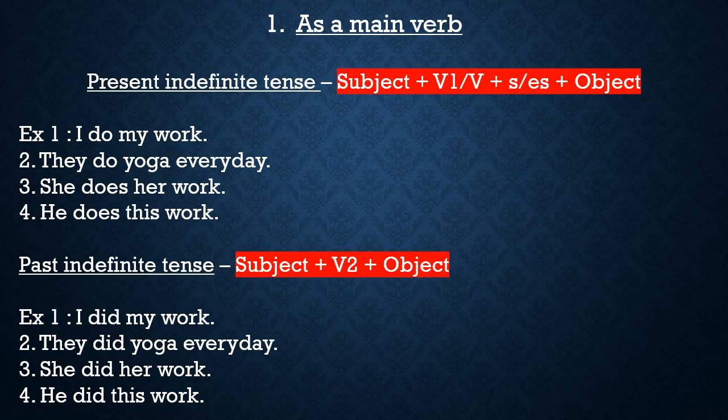Now the first use of do, does and did is as a main verb. In red color you can see the structure of the sentence: subject plus first form of verb or verb with s/es, plus object. Examples: 'I do my work' — main apna kaam karti hun. I is considered a plural subject, therefore first form of verb do is used. 'They do yoga every day' — ve roz yoga karti hain. Here also subject is plural, therefore do is used.